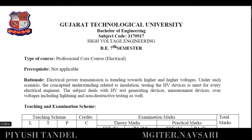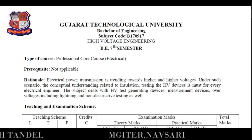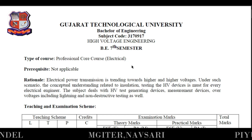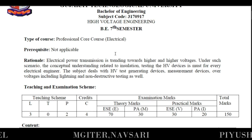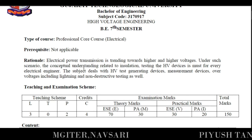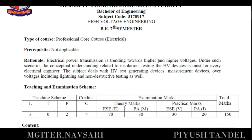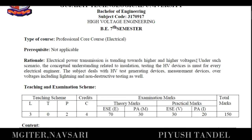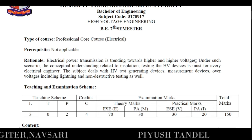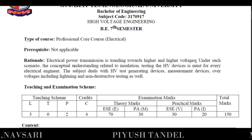This is your seventh semester and the subject code is 3170917. This is a professional course in electrical engineering. The rationale for this subject is that electrical power transmission is trending toward higher and higher voltages because as demand increases we need to supply more power. Since P equals V into I, to supply more power we increase the voltage level.